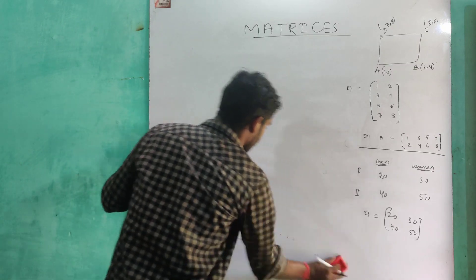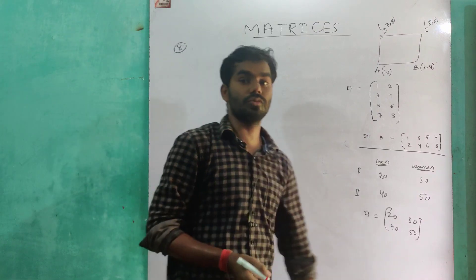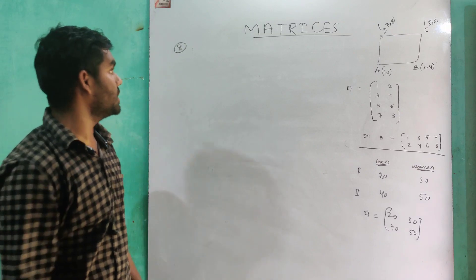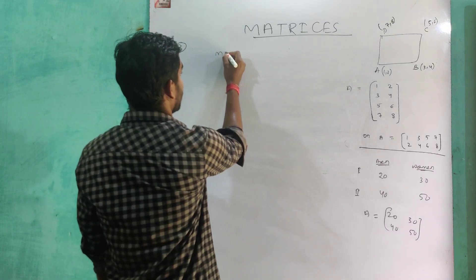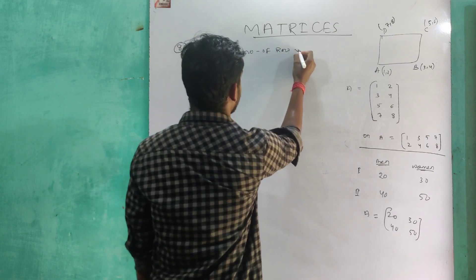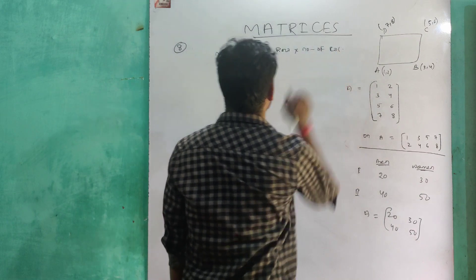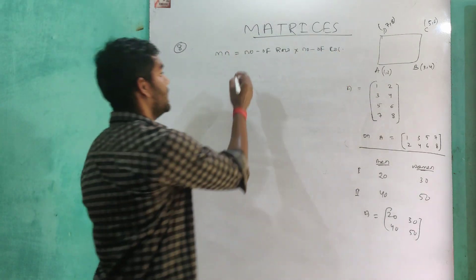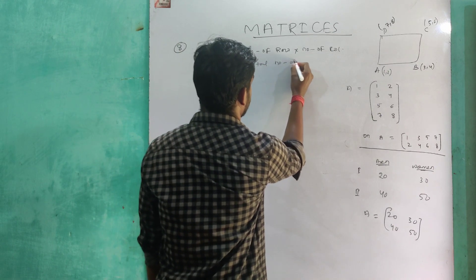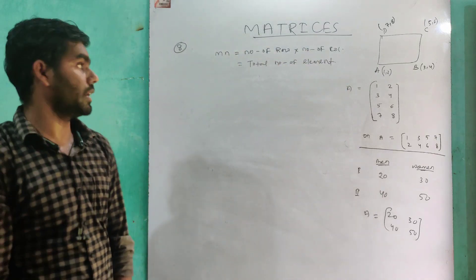Suppose a matrix has 8 elements. The order of the matrix — n equals to number of rows, and n equals to number of columns. So the number of rows multiplied by number of columns gives the total number of elements in a given matrix.